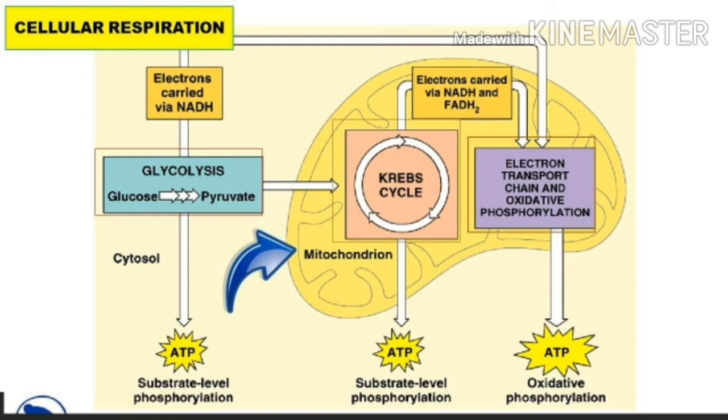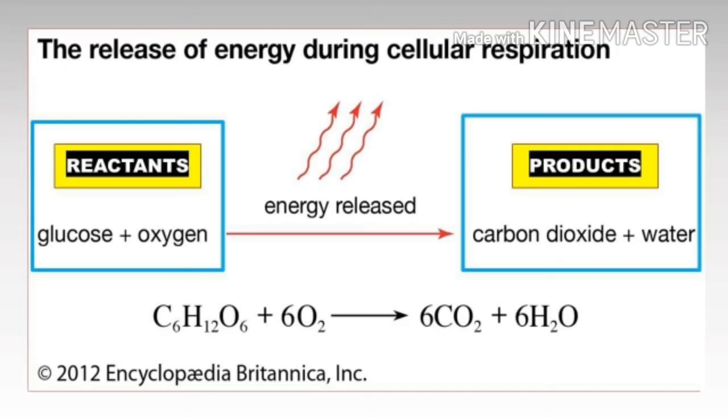In the mitochondria, sugar combines with oxygen to produce carbon dioxide, water, and energy in the form of ATP. The breakdown of glucose involves three major steps: glycolysis, the Krebs cycle, and the electron transport chain.